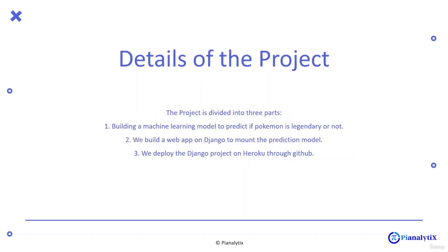The project is divided into three parts. The first is building a machine learning model, the second is building a web application where we can mount our prediction model, and the last is deploying that web application on Heroku. We will be using a Django backend to build the web application.